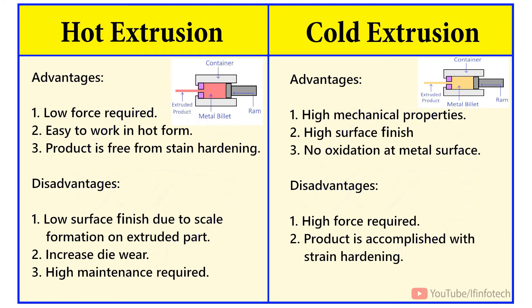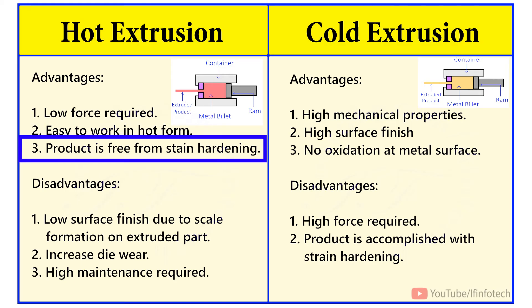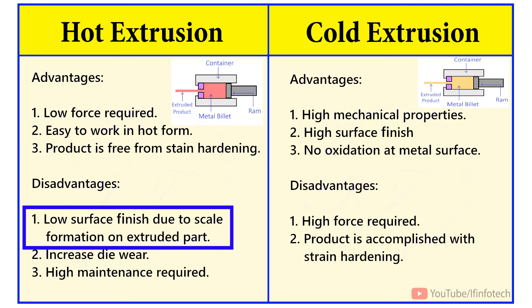In hot extrusion process, the force required to press the metal billet is low compared to cold extrusion process because the metal is at melting temperature. Hot extrusion product is free from strain hardening, but the surface finish is low due to scale formation on the finished product.